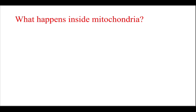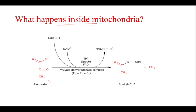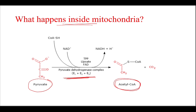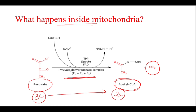Once pyruvate has reached the mitochondria, inside the mitochondria the pyruvate undergoes an oxidative decarboxylation reaction to form acetyl-CoA. This 3-carbon compound is converted to a 2-carbon compound with the removal of carbon dioxide, and this occurs in the presence of the enzyme called pyruvate dehydrogenase multi-enzyme complex.